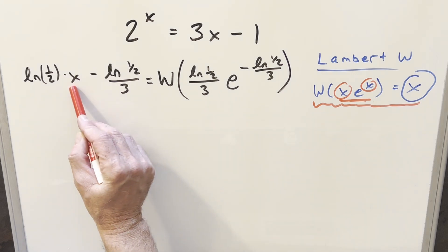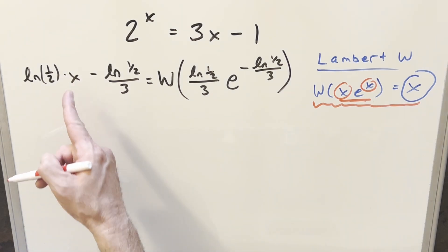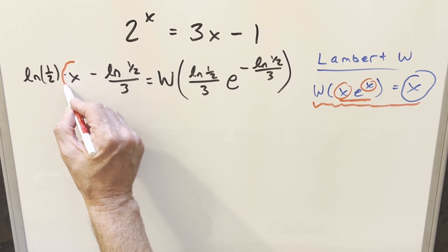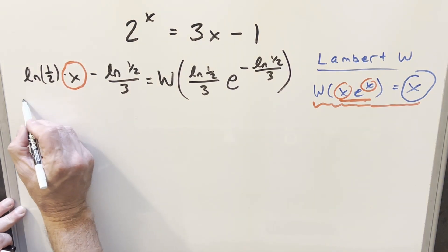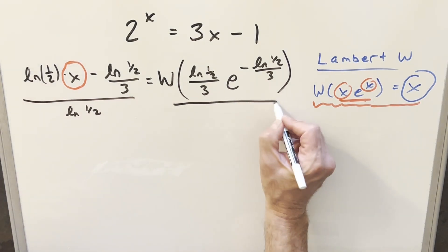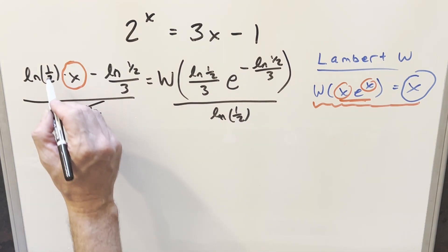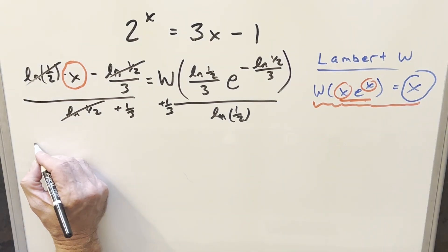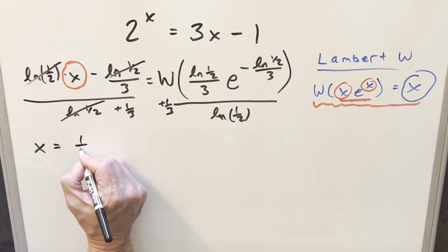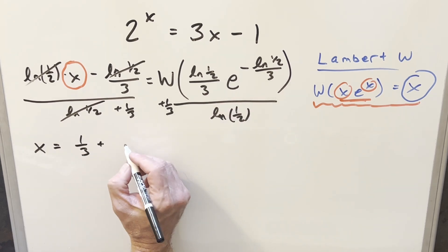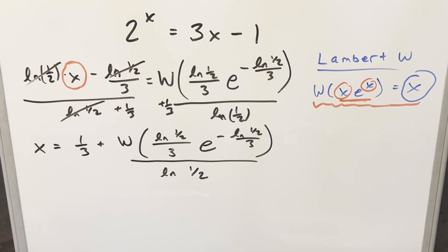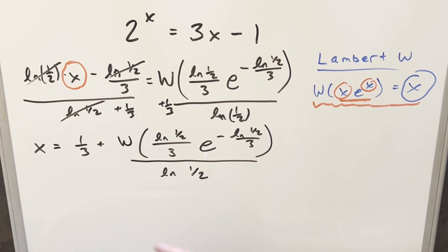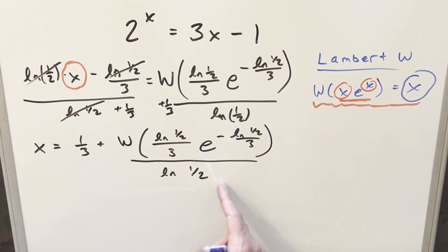Now I'll flip the equation so we have our x value on the left side. Notice we only have one x in our equation now, so it won't be too bad to solve for x. If I divide by ln(1/2) on both sides we can get rid of it on the left, and then add plus 1/3 on both sides. Doing that, we've isolated x, but we still have a pretty complicated expression: it's going to be 1/3 plus all this Lambert W stuff. So really, this is a solution — it's just kind of a mess.